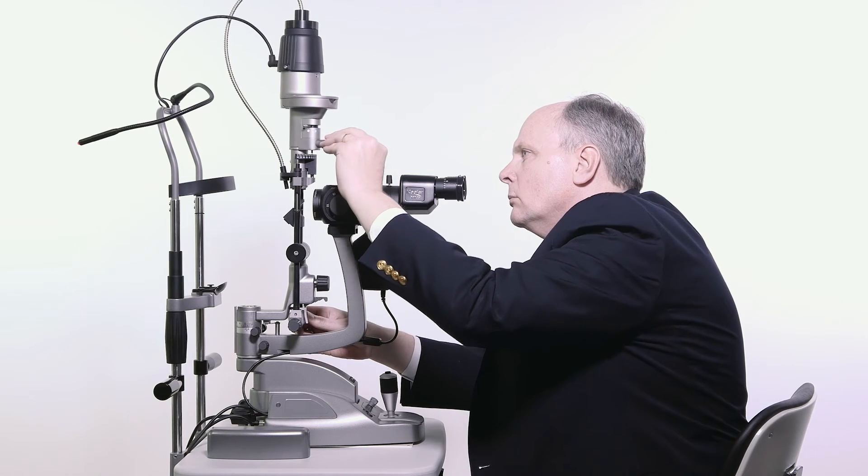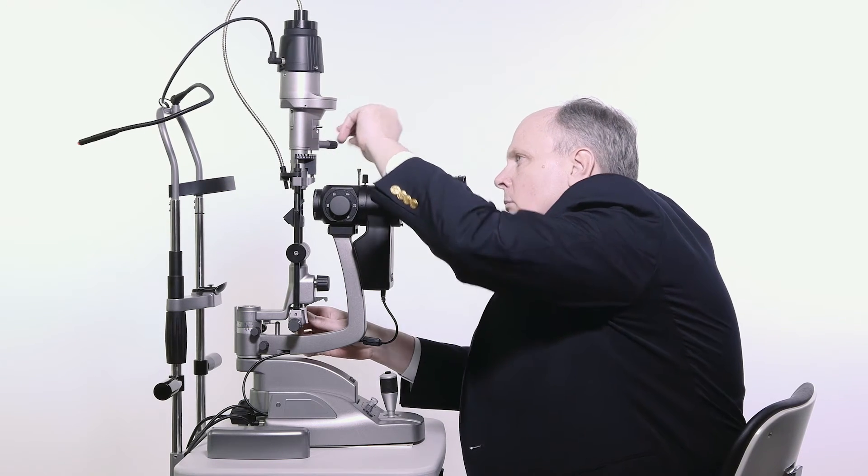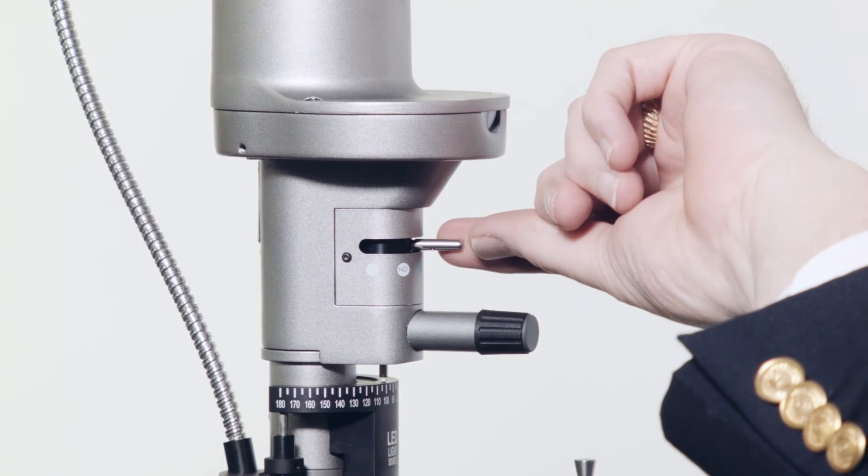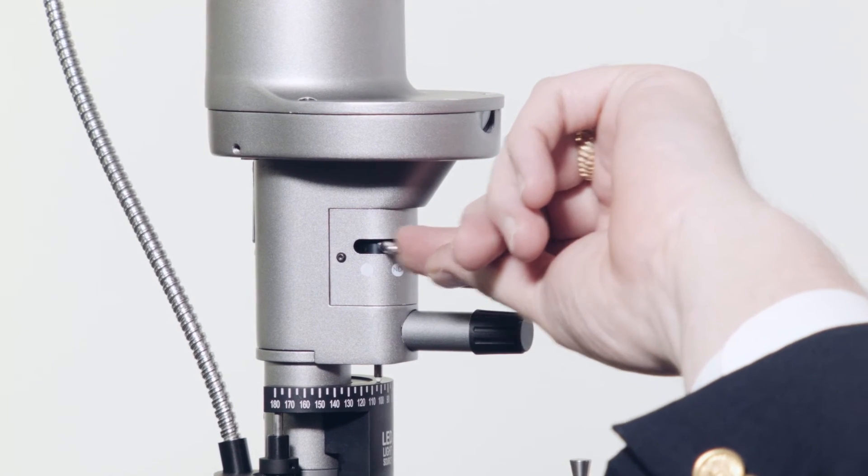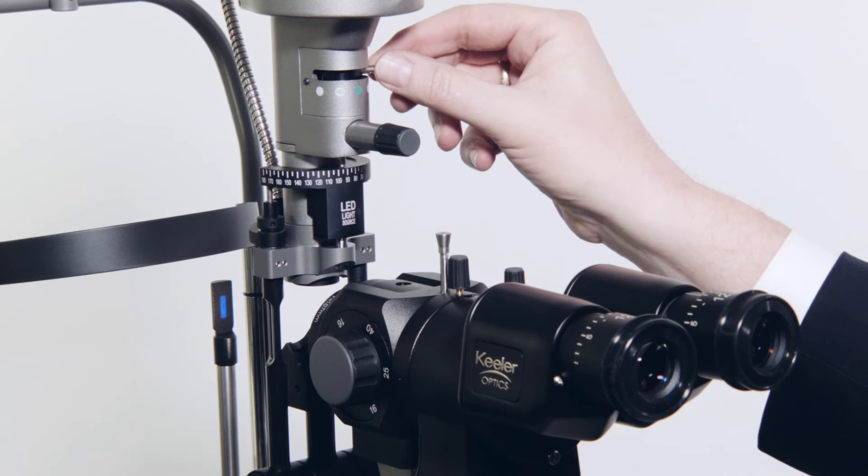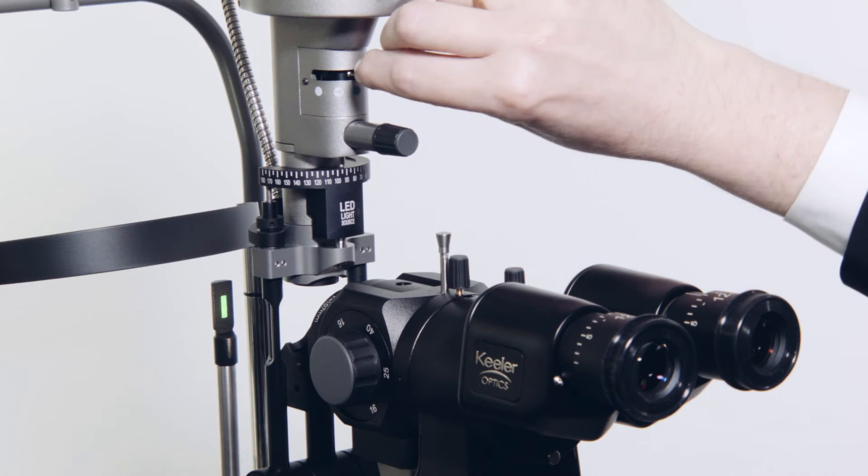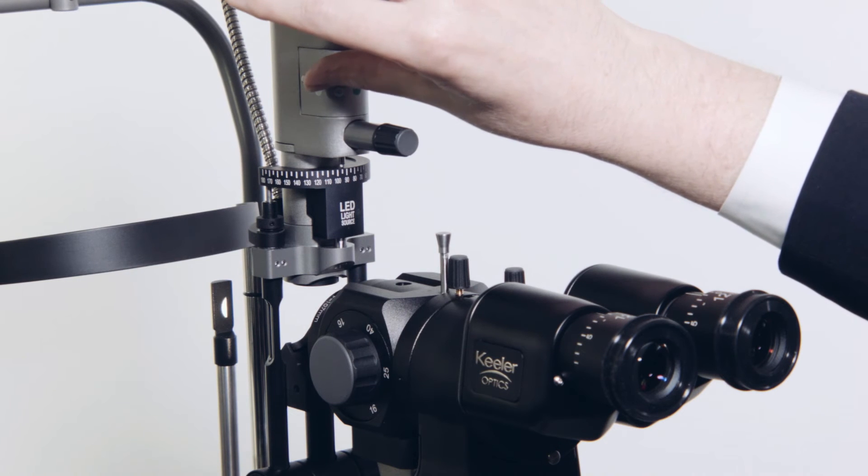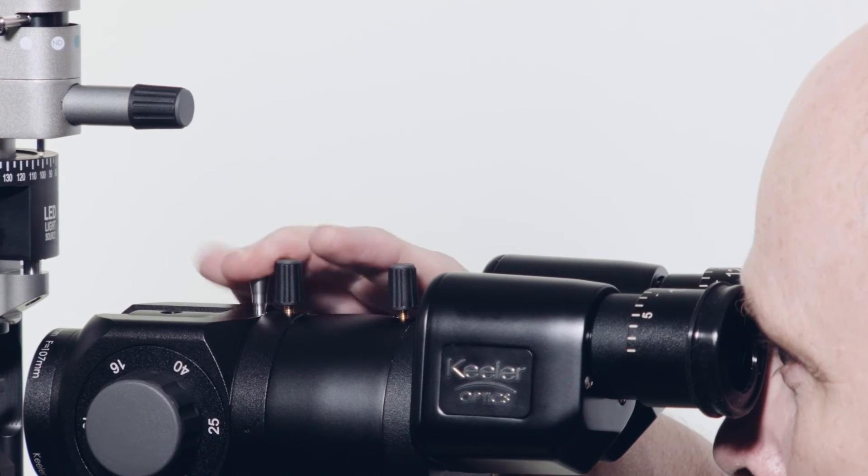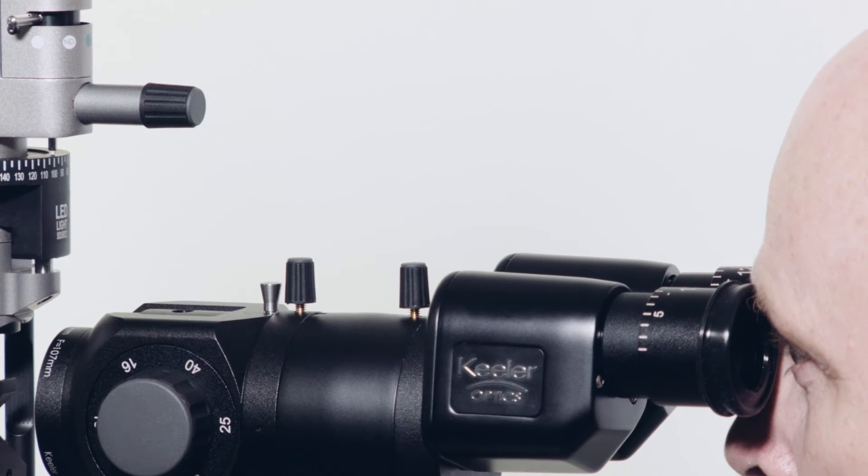Slit angle can be adjusted as required to perform the examination. The Q series slit lamp offers a full range of filters required for examination. These filters are blue, red free, yellow, clear, and neutral density diffuser. The yellow filter can be inserted and displaced by using this plunger.